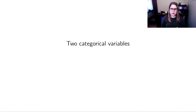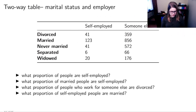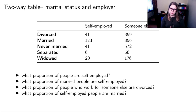We're going to move on to thinking about two categorical variables. If we have two categorical variables, we do similar kinds of summary statistics, but instead of just a frequency table, we're going to do something called a two-way table.